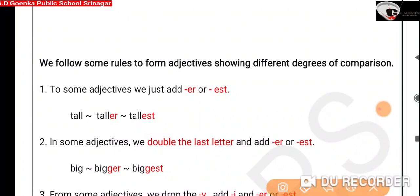Rule number 1: To some adjectives, we just add -er or -est to form different degrees of comparison. For example, tall is in positive degree. We add -er to make it comparative and -est to make it superlative. Tall, taller, tallest.